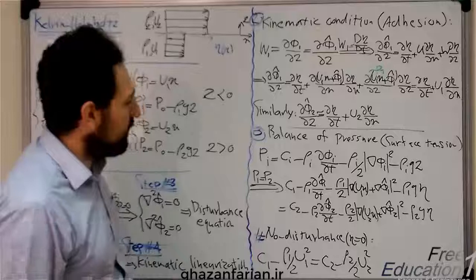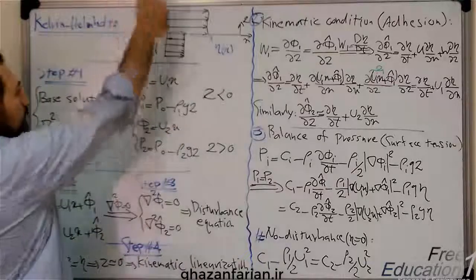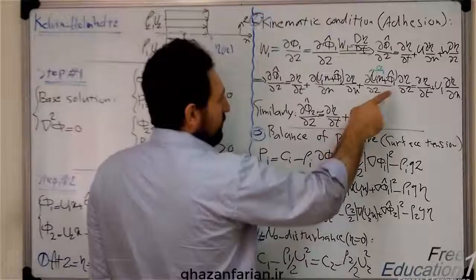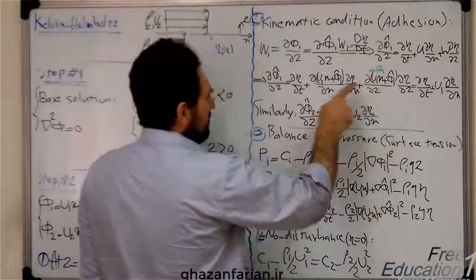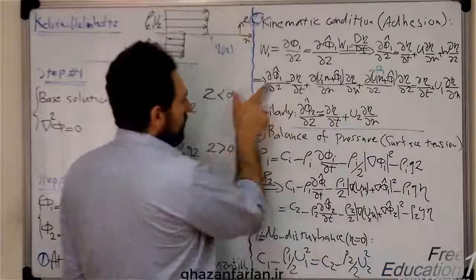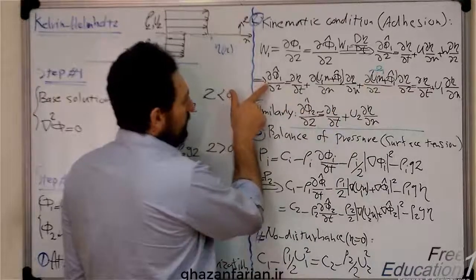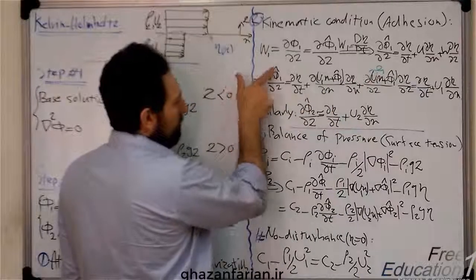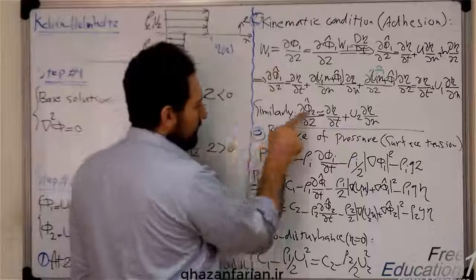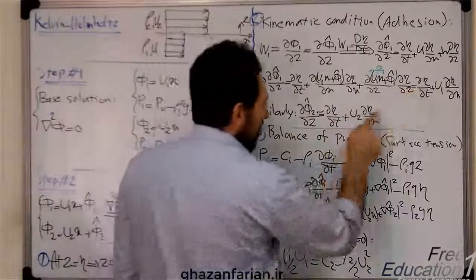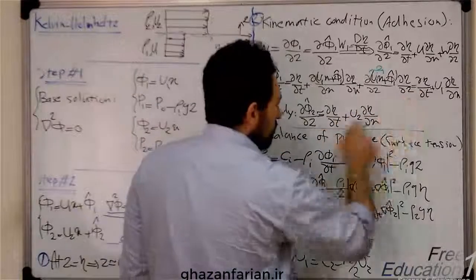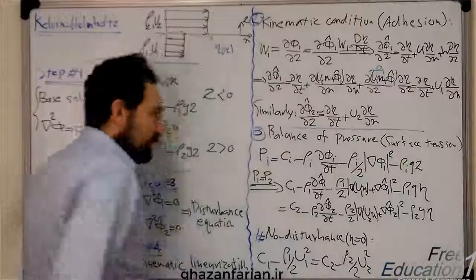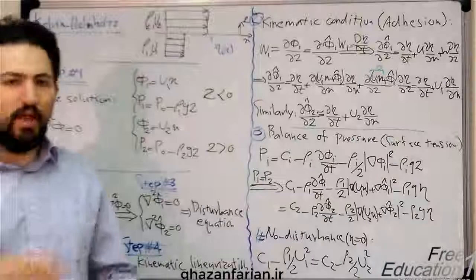Similarly, for the second fluid at the interface, replace indices 1 with 2. We then have the partial derivative of phi-hat 2 with respect to z, eta, U-2, giving the linearized adhesion and kinematic conditions at the interface for both fluids.